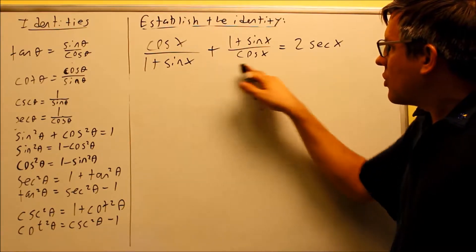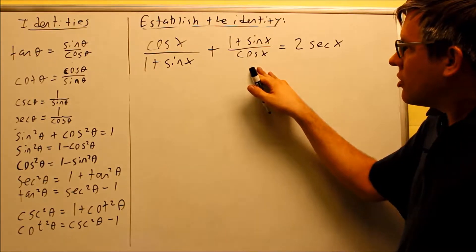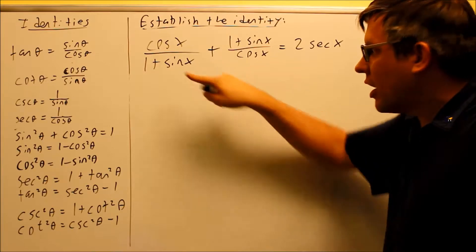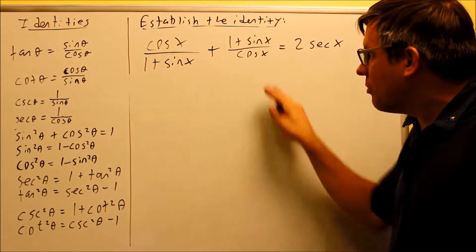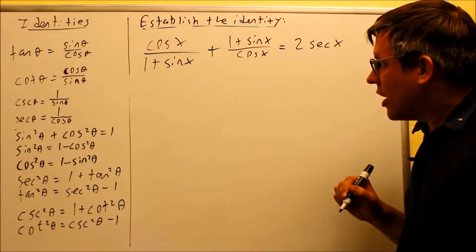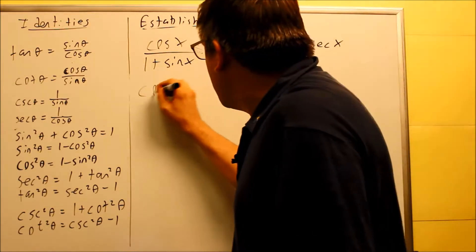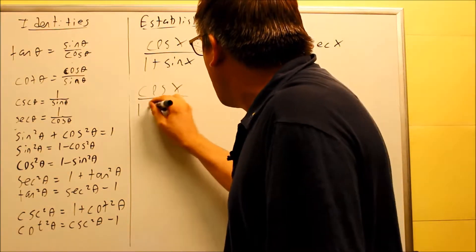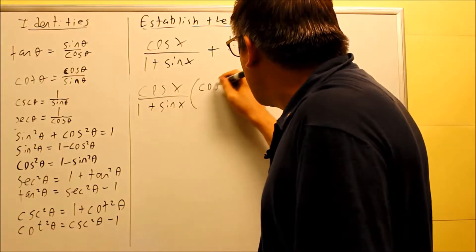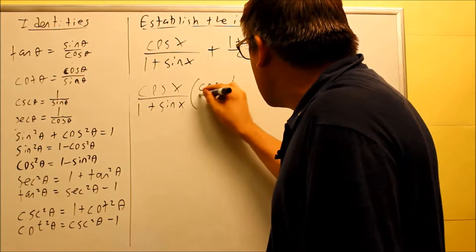Now that we have this, we're going to combine together into a single fraction by getting both these denominators to be the same. The common denominator will be cosine times 1 plus sine x. This first one already has the 1 plus sine x, but I want to multiply that by cosine over cosine, because that's what it's missing.